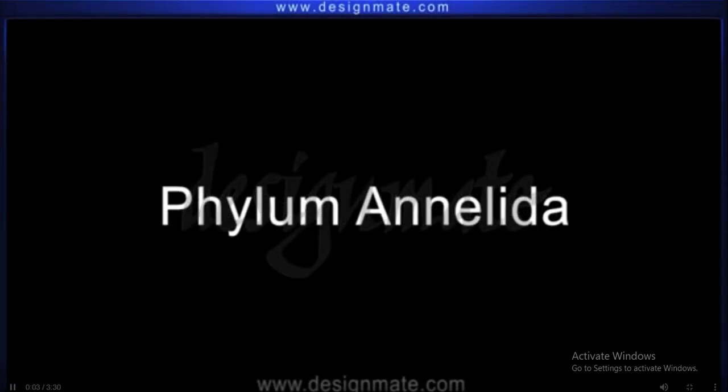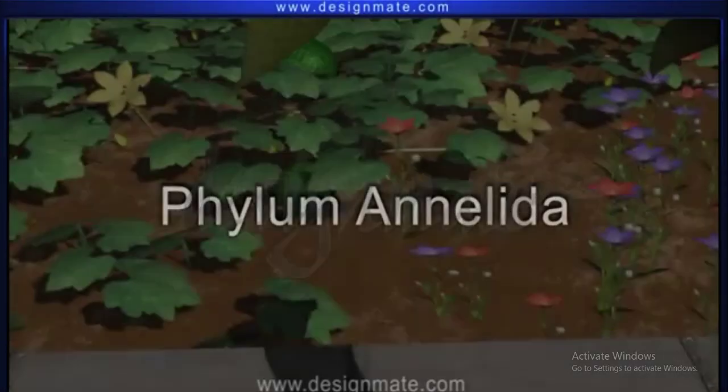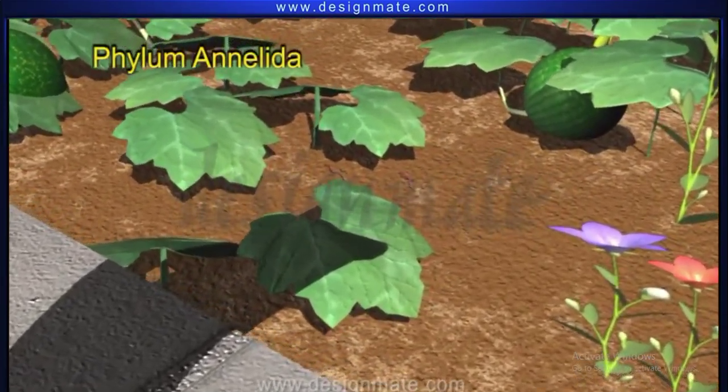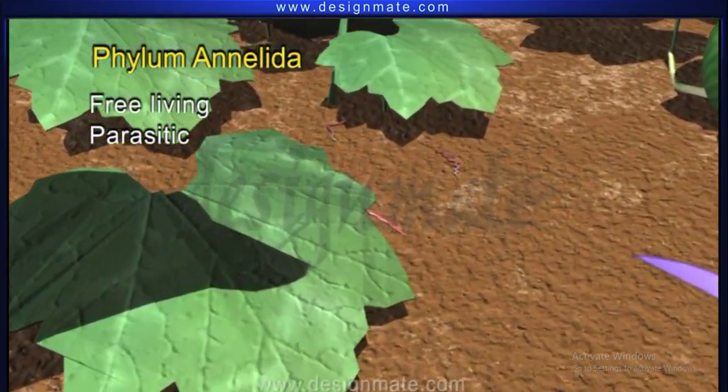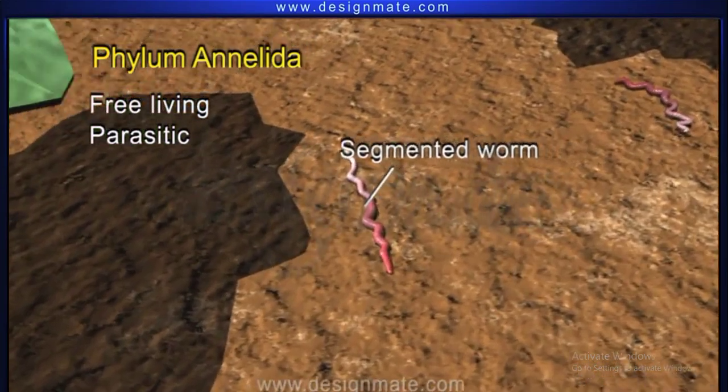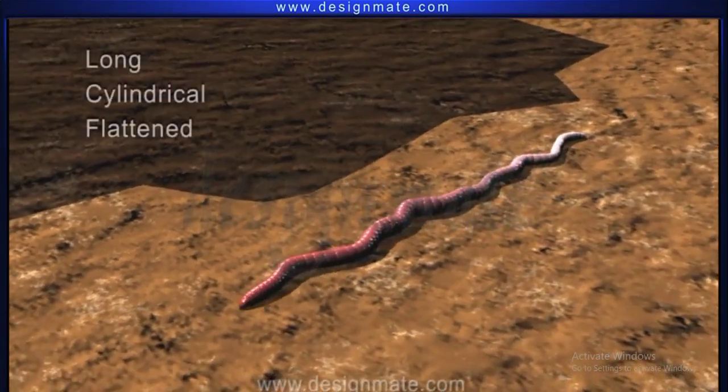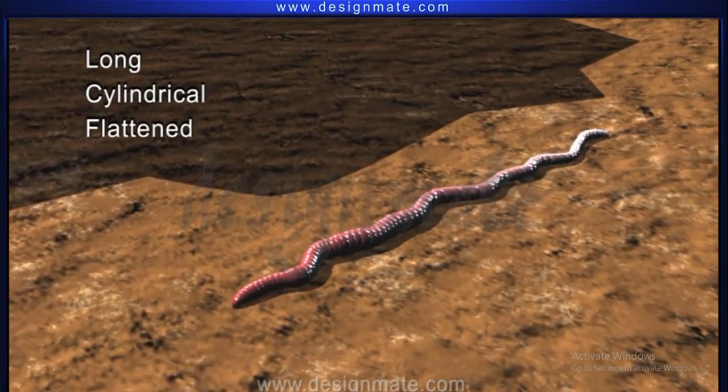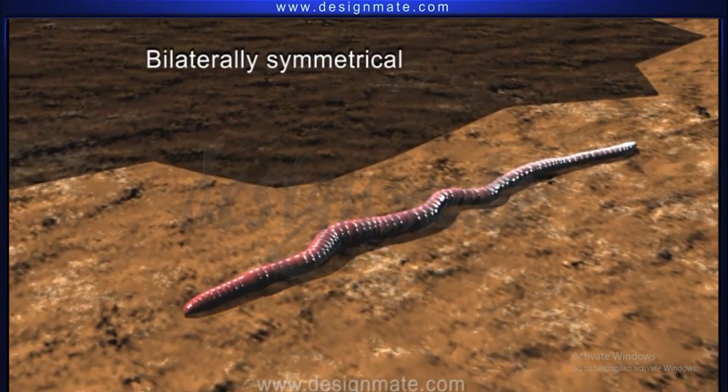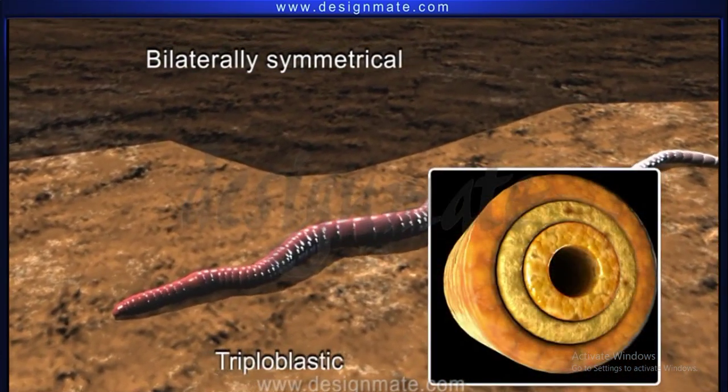Phylum Annelida consists of both free living and parasitic segmented worms. Their body is long, cylindrical or flattened. They are bilaterally symmetrical and triploblastic animals.